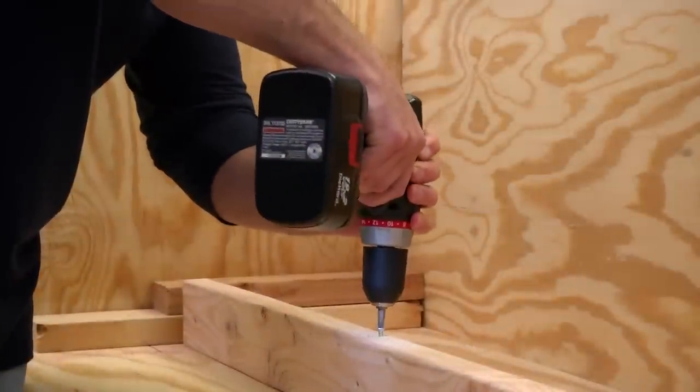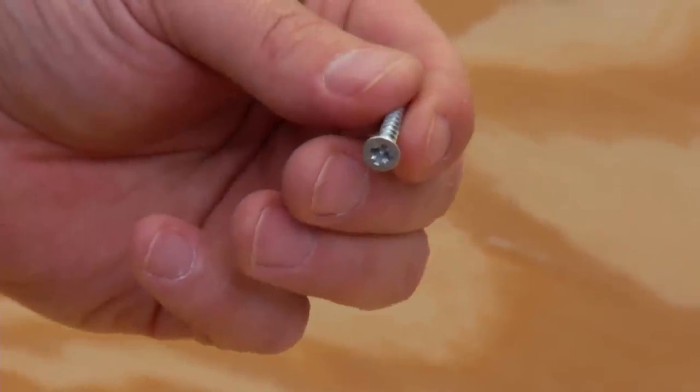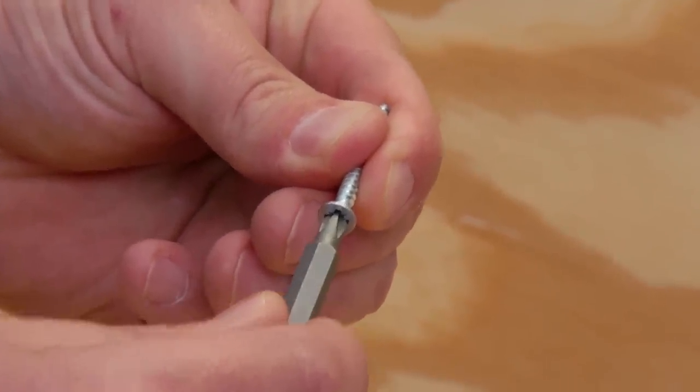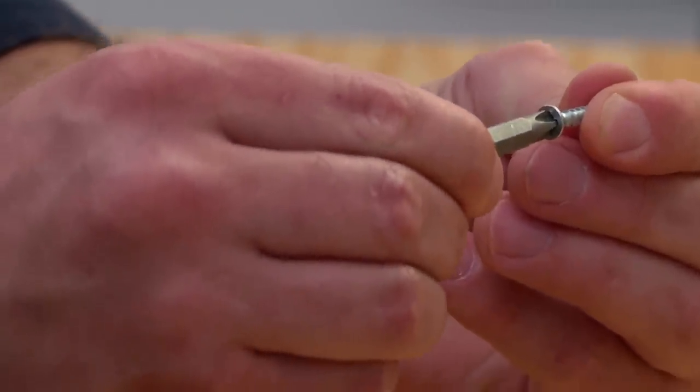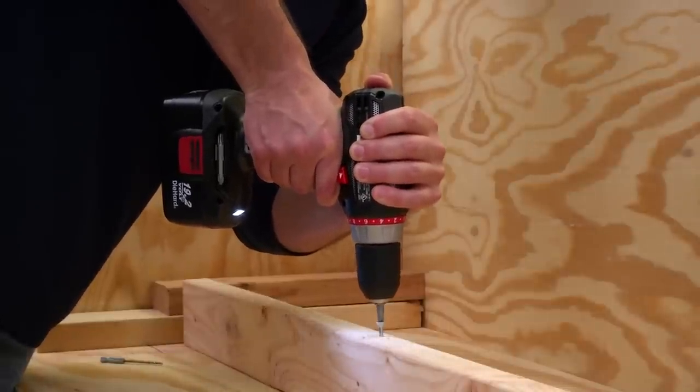If you notice the bit starting to spin on the head of the screw, stop. You might need to change to a bit that fits tighter into the head of the screw. The tips are angled differently to grip onto the fastener's heads. And make sure you're holding the drill straight and have enough pressure on as you drive.